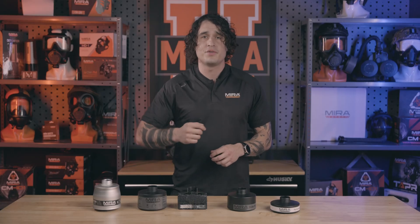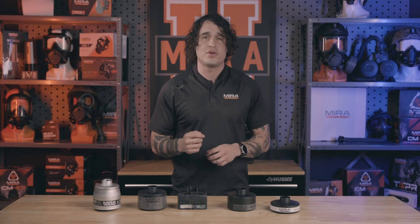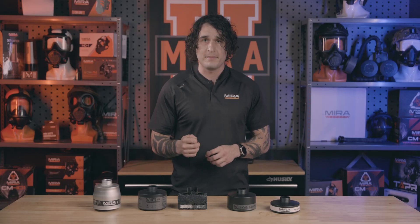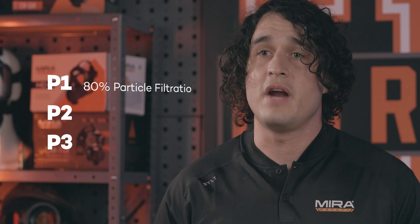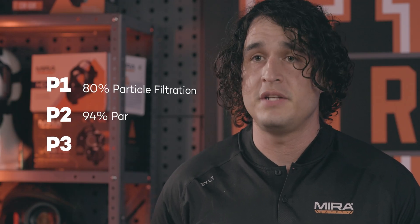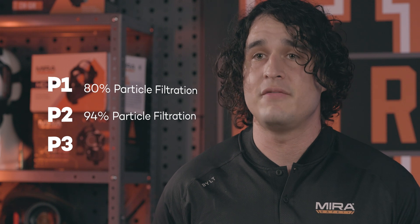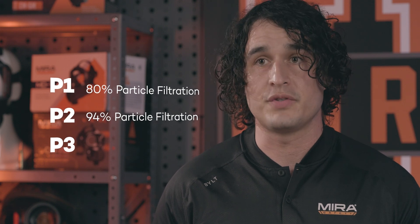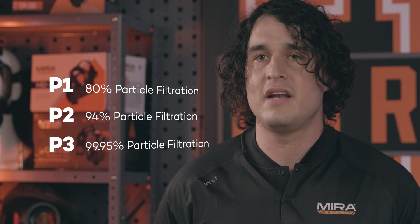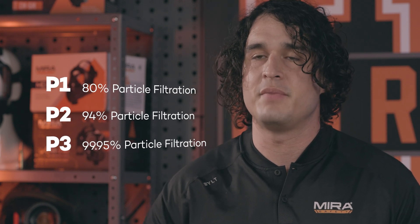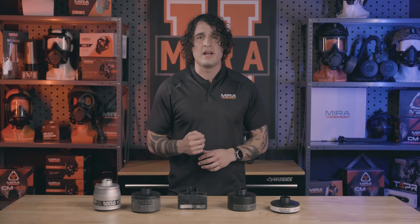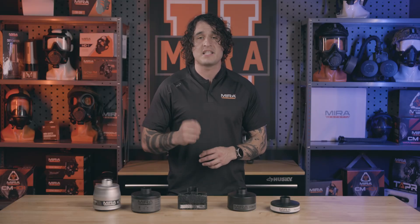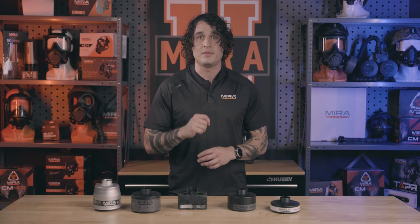The next thing to know is your filter's particle filtration rating. A filter can be rated P1 through P3. P1 is rated for 80% particle filtration, P2 is rated for 94% particle filtration, and P3 is rated at 99.95% particle filtration — giving you the maximum particle filtration possible.